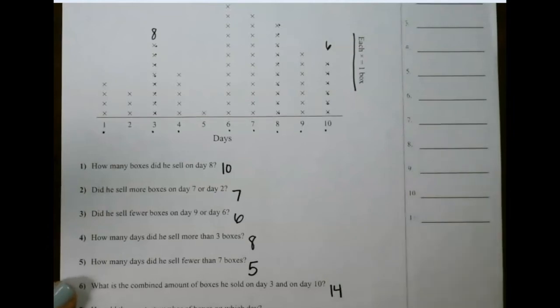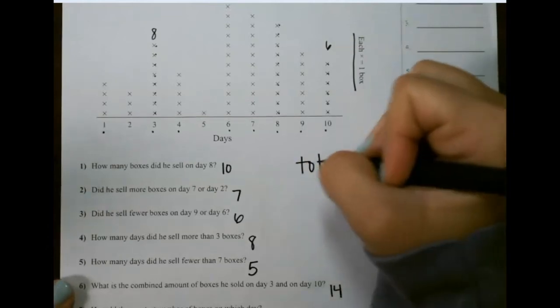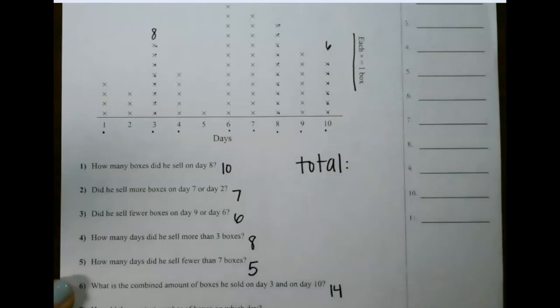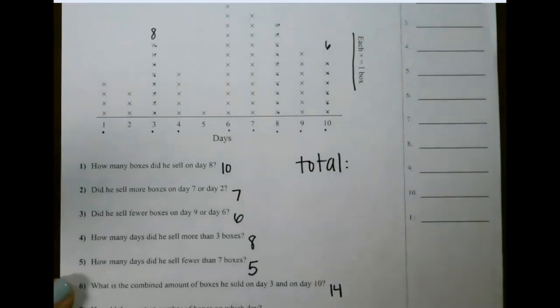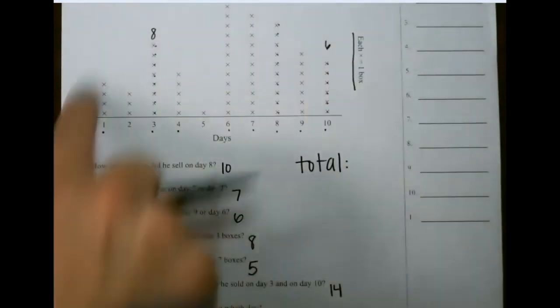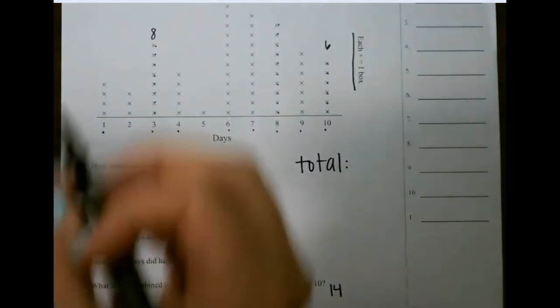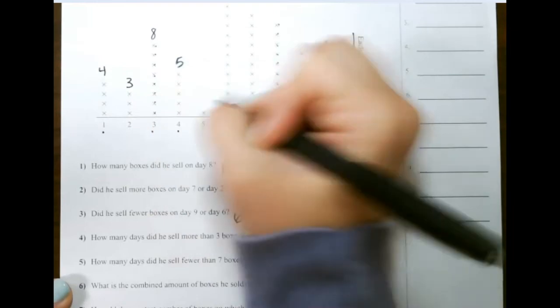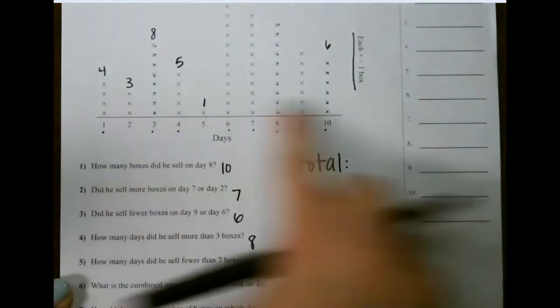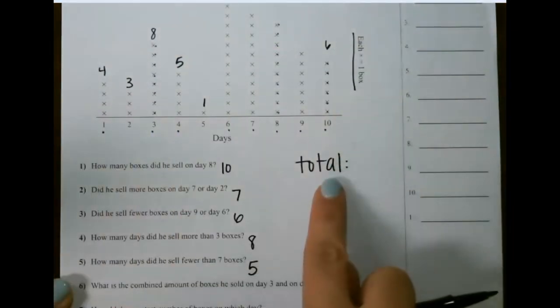One question that I see a lot of people miss is how many total days or how many total boxes did he sell? For that, you would count up all of the x's that we have here, add up all of the numbers, and you would count each x here and that would give you the total.